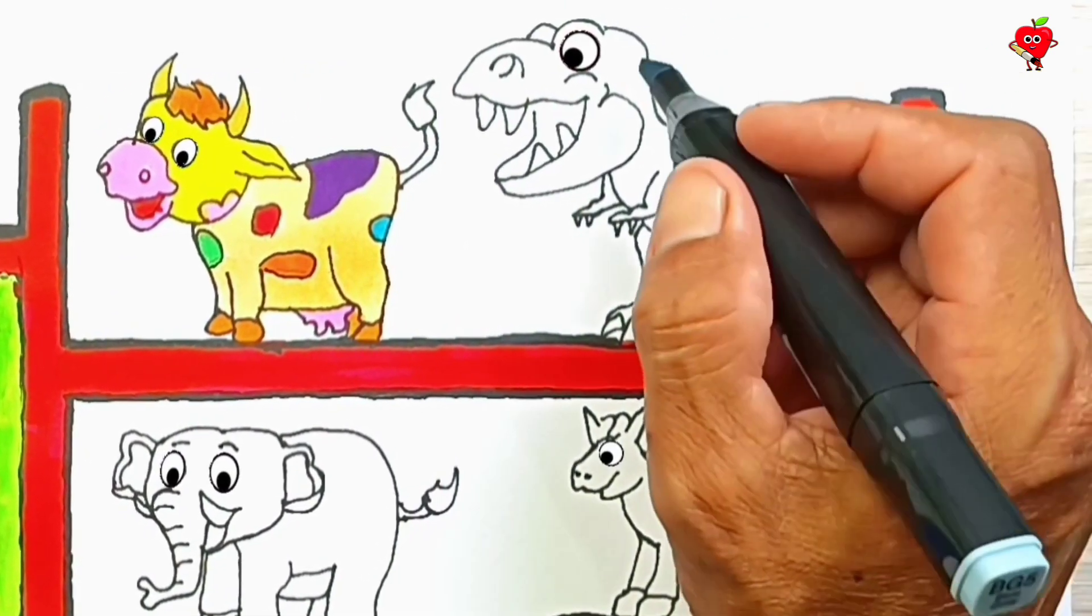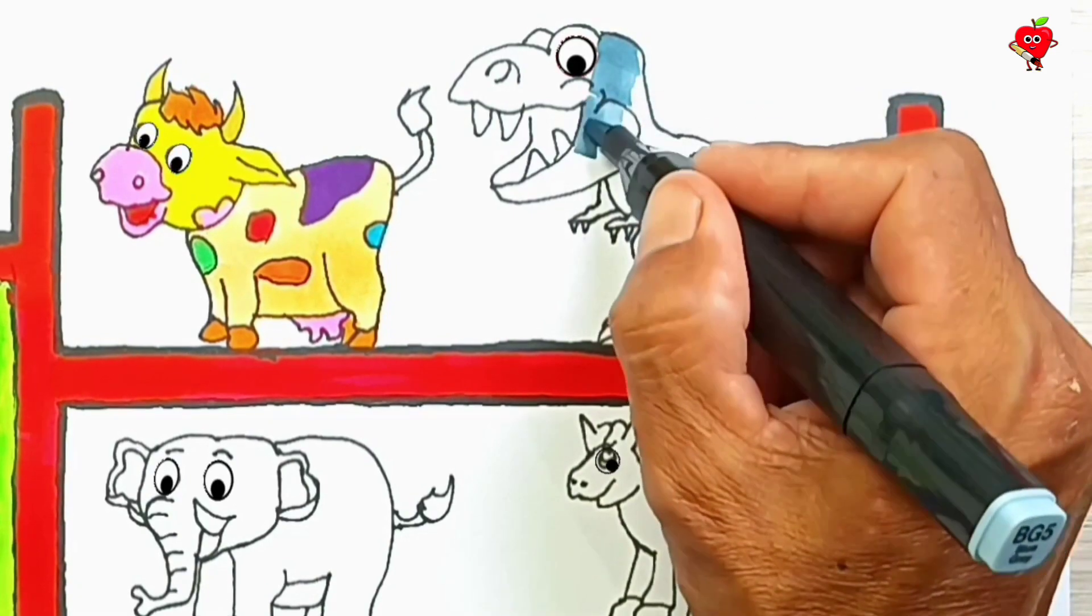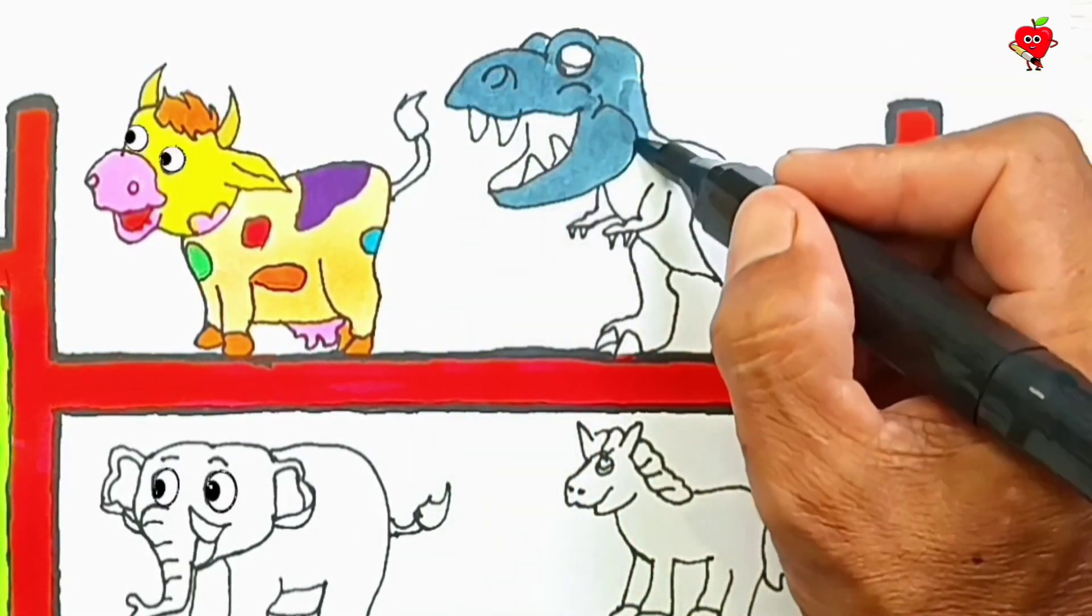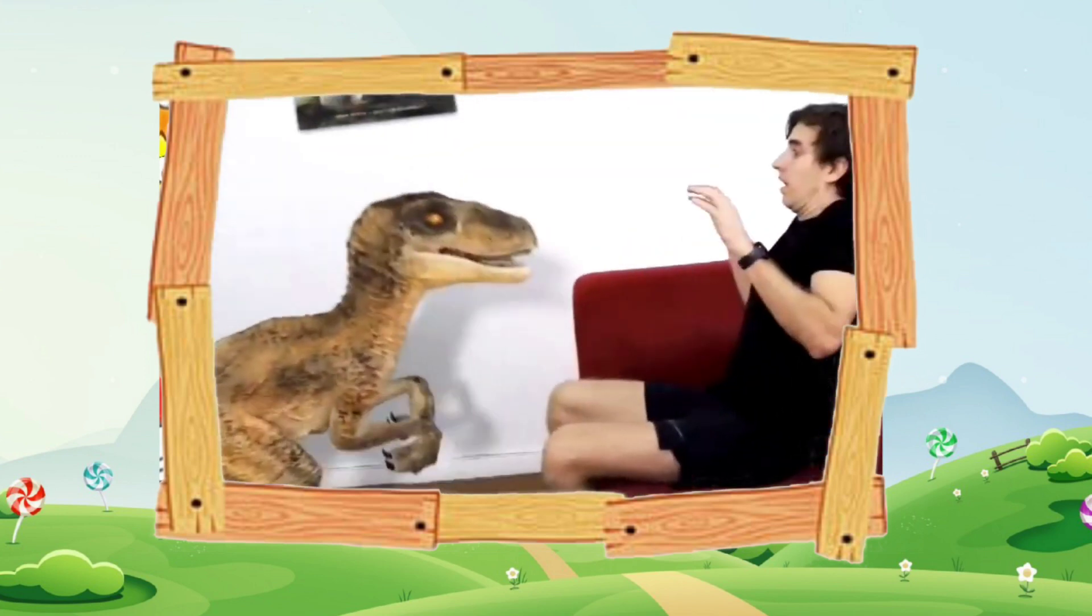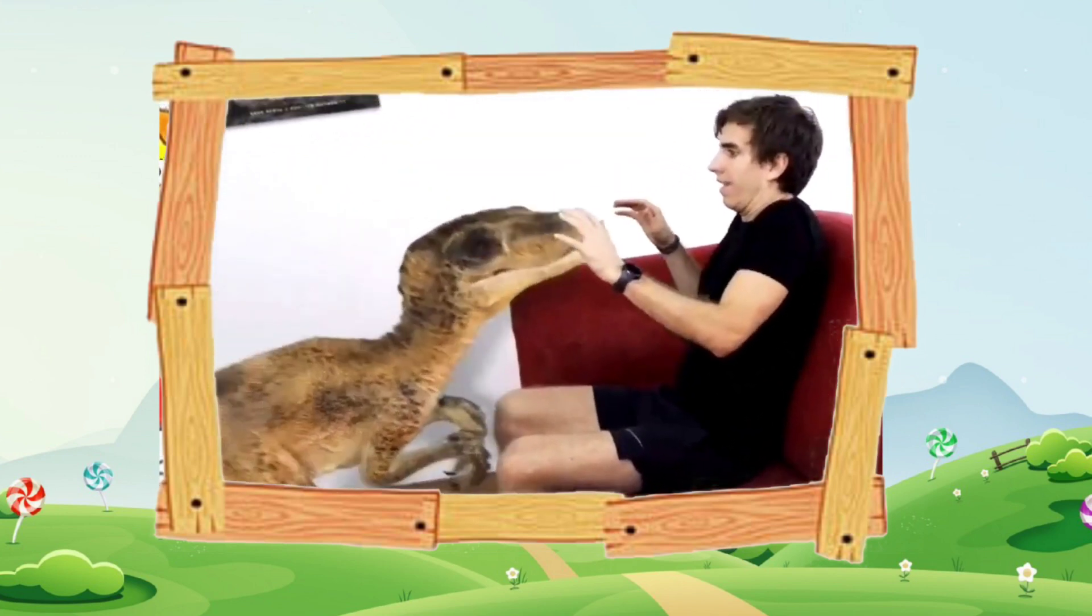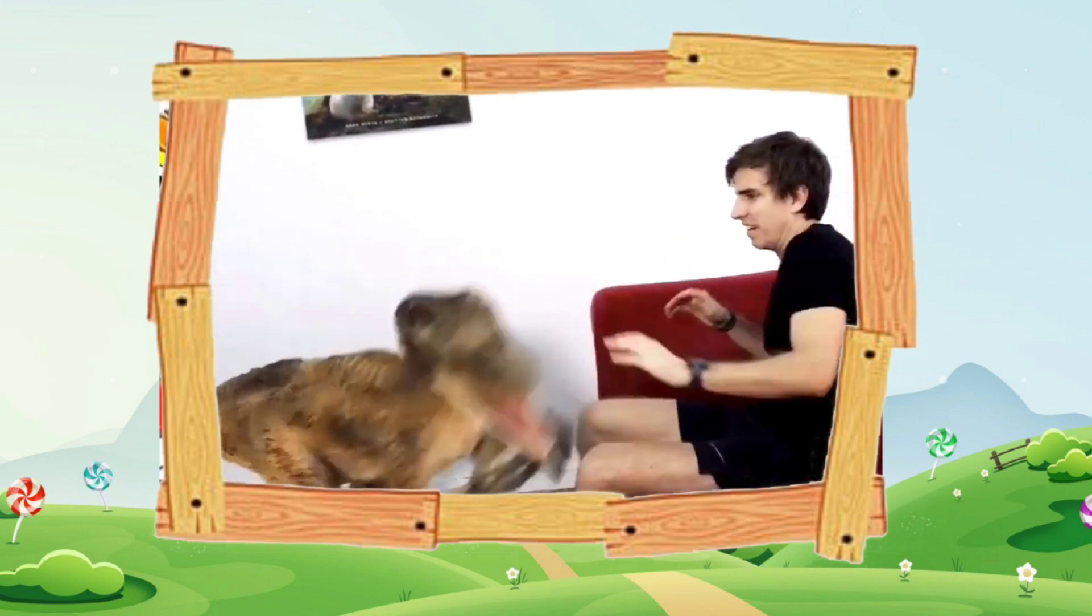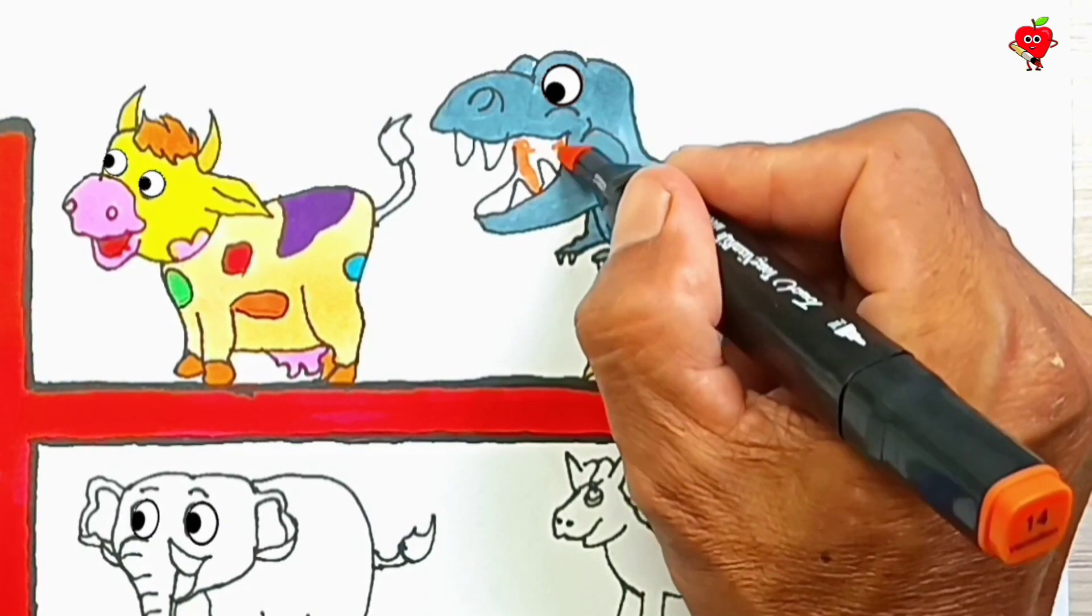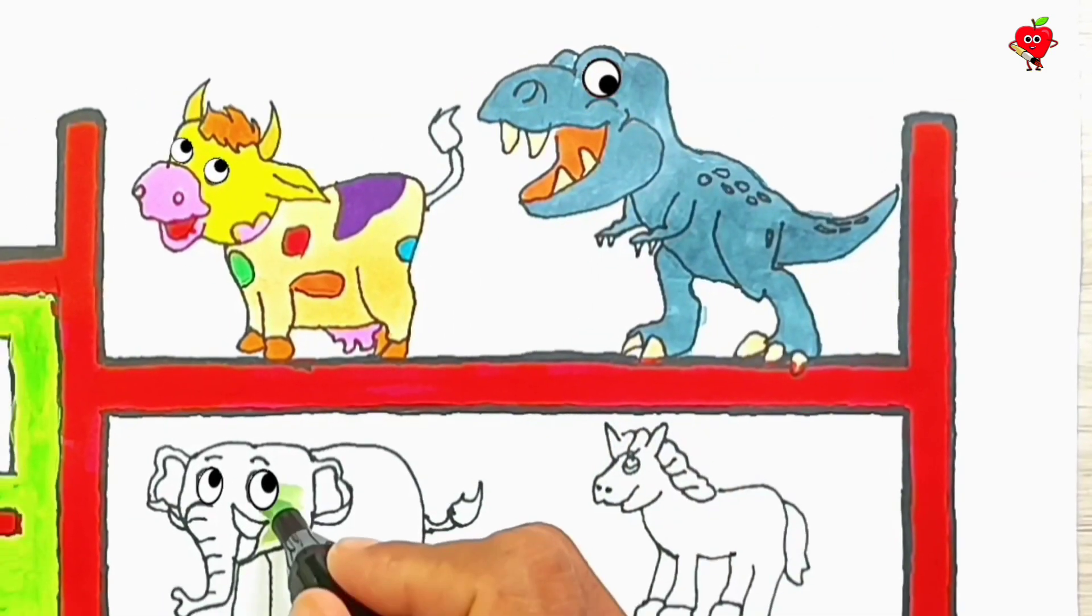Wow, amazing! Oh no, next we will color spooky animals. He is a T-Rex, a very scary flesh-eating dinosaur. We will color spooky animals. Wow, very amazing, but that animal is extinct on this earth.